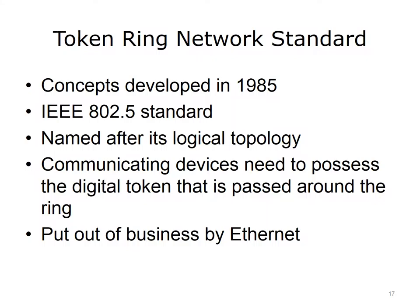The Token Ring network standard was developed in approximately 1985 and is part of the IEEE 802.5 standard. Token Ring is named after its logical topology, since its physical topology is a star. Devices connect to each other, usually by a switch, via Ethernet cable. Communicating devices must possess a digital or electronic token passed around the ring. The token passes from device to device through the switch. Devices pass the token until they need to communicate, then hold it until finished. Ethernet made Token Ring obsolete because Ethernet is much faster and easier to implement; Token Ring requires its own NICs and switches.